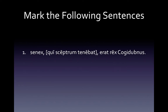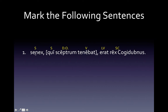Here is sentence number one. You can see that I put brackets around 'qui scaptrum tennebot' because that is the relative clause. Here I have everything marked. This right here might be a little confusing — this is a subject complement; these two words go together: 'king kagadubinus.' Both of these are nominative singular. And 'qui' here, our relative pronoun, is masculine and singular. It could be plural in form, but according to context it is singular because the verb is singular. Outside of the relative clause, we have 'sennex,' which is also masculine singular. Therefore, that is the antecedent.